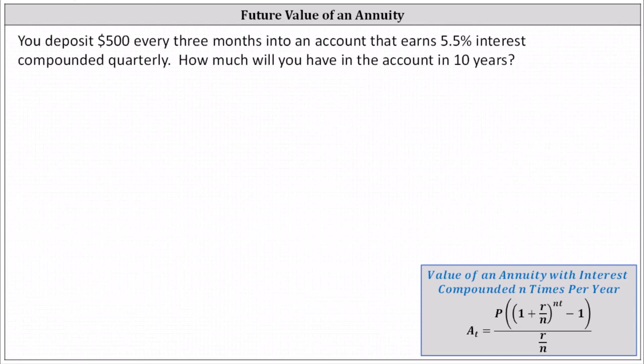It's important to recognize in this problem, by making a $500 deposit every three months, you are making quarterly deposits, which is the same as how often the interest is compounded. Notice the interest is compounded quarterly.